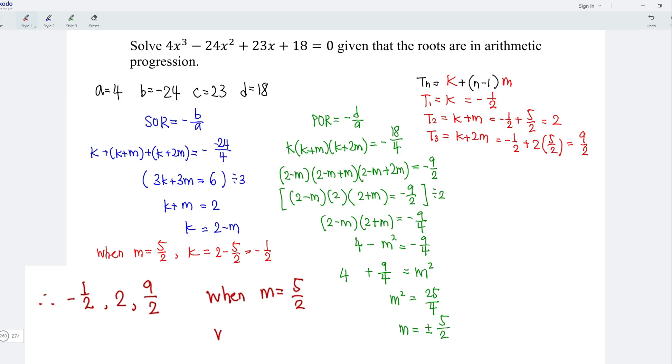On the other hand, if we take negative number, that is negative 5 over 2, our answer should be in descending order, that is from bigger value to a smaller value. However, we should obtain exactly the same sets of roots, regardless of the plus minus sign of M value as we can see here.